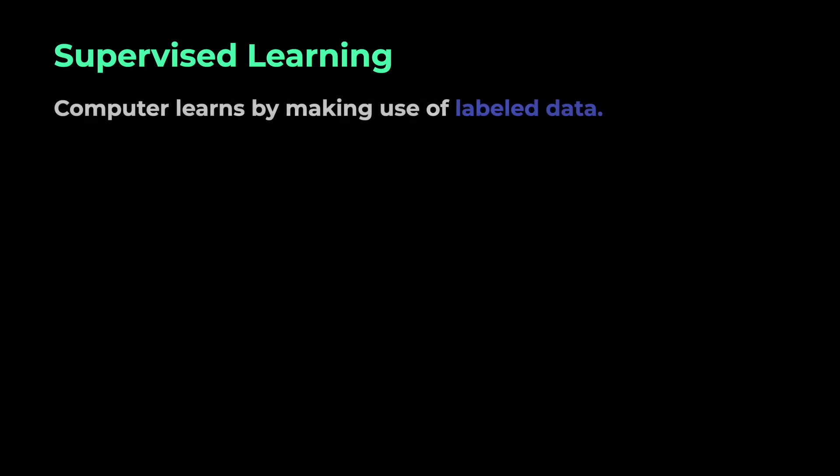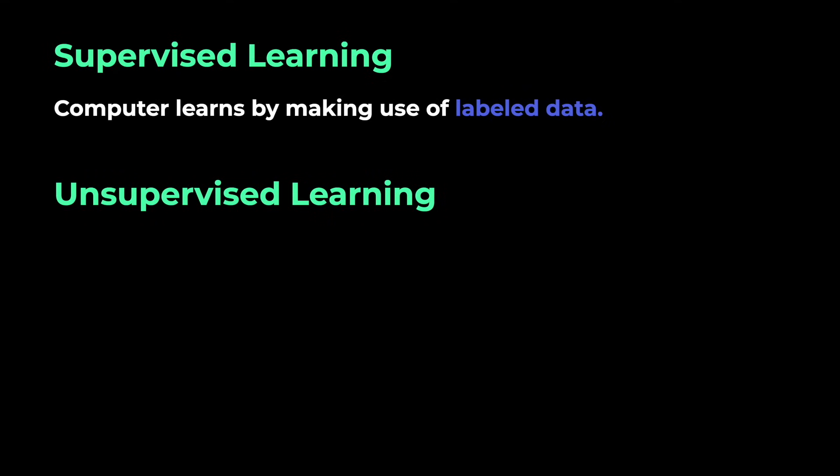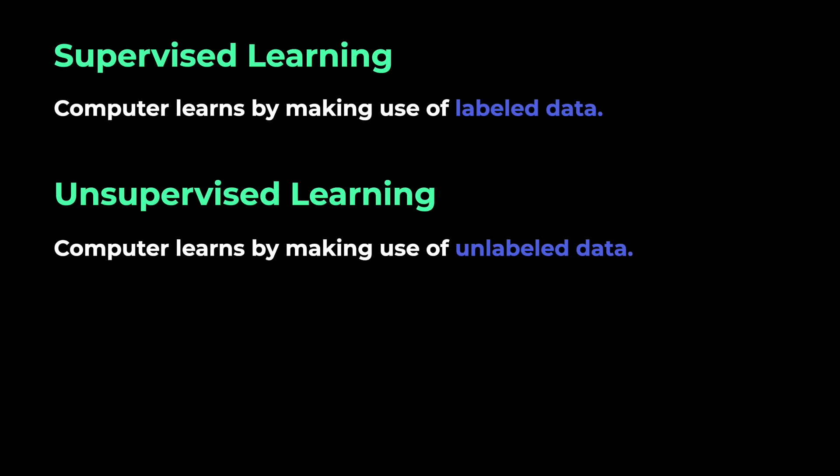In the last video we learned about supervised learning where the machine learning model learns by making use of labeled data. Now in unsupervised learning we have unlabeled data, meaning we have data but we don't know the corresponding class or target for the features. This process is oftentimes more complex but it has the huge advantage that it does not require upfront human intervention to label the data.